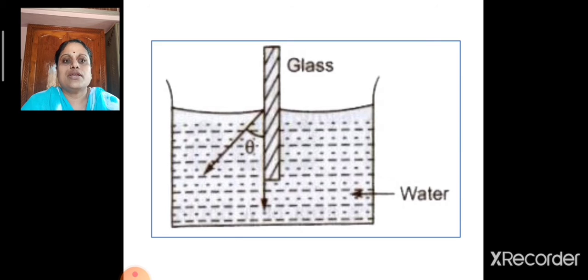In this picture you can see that the water taken in the beaker makes some angle with the glass rod dipped in it. The angle made by the tangent to the liquid surface at the point of contact and the solid surface which is inside the liquid is the angle of contact which is marked as theta.